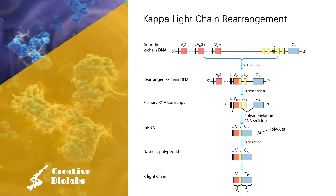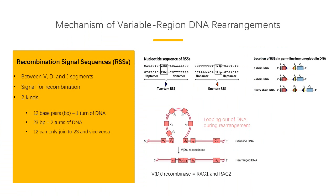Light chain gene rearrangement principle and process is similar to that of heavy chain genes. There are no D genes in light chains. Kappa chain is rearranged first; then, if rearrangement of both kappa alleles is unsuccessful, lambda chain is rearranged. VDJ recombination proceeds via precise DNA cleavage initiated by the RAG proteins RAG1 and RAG2 at short conserved signal sequences. The coordinated expression in pre-B cells is essential for the rearrangement of Ig genes, but RAG activity is switched off in mature lymphocytes.